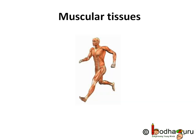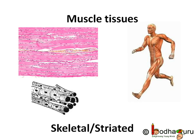The muscle tissues are made of elongated muscle fibers. This tissue is responsible for the movement in our body. The muscles contain special contractile proteins which contract and relax to cause movement.